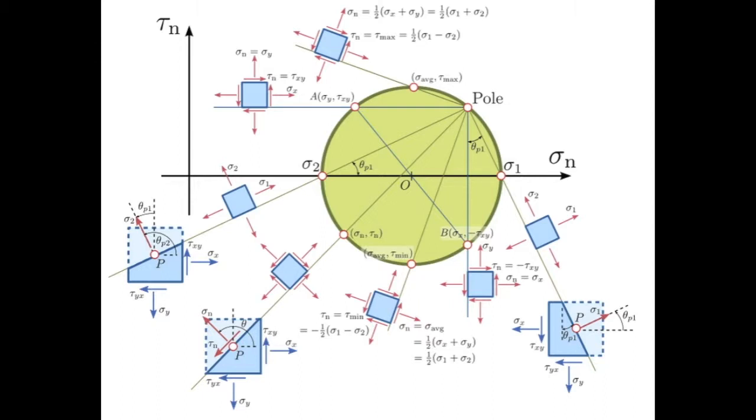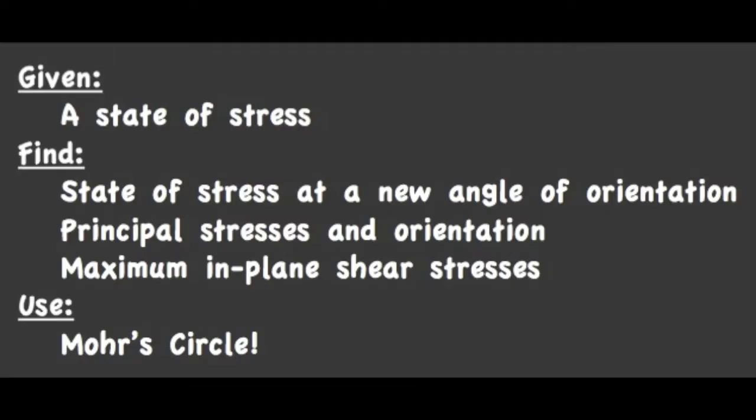Mohr's Circle is a graphical tool, a visual way to see how to go from one state of stress to another. Usually, you're given a state of stress that you calculated from using stress equations. Then you want to find the state of stress at a new angle of orientation, or principal stresses at that orientation, or the maximum in-plane shear stresses. And Mohr's Circle allows you to draw this representative element to visualize the calculations for you.